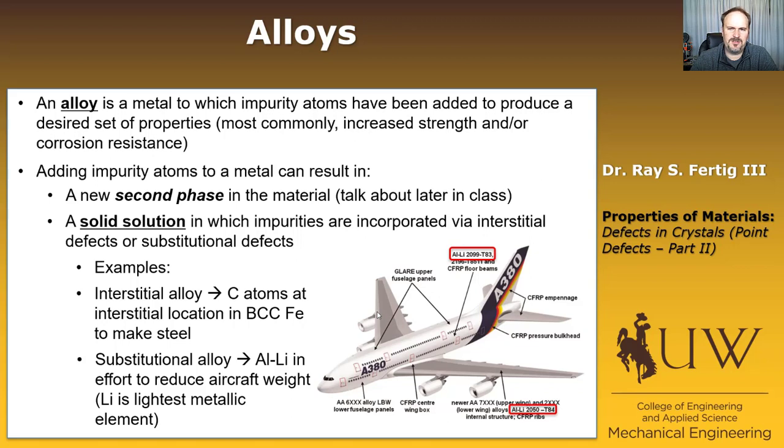So those are two examples: one example of an interstitial, which is just steel, which I don't need to show you a picture of, and then the other being aluminum lithium alloy. There's lots of other types like this.